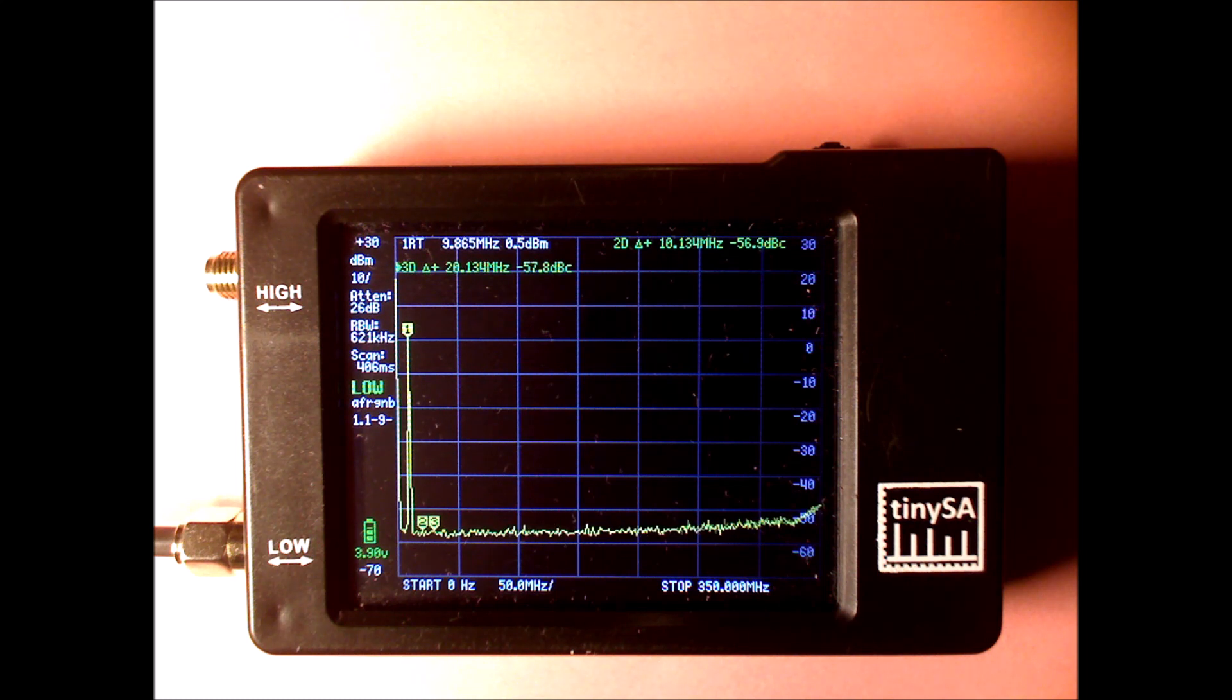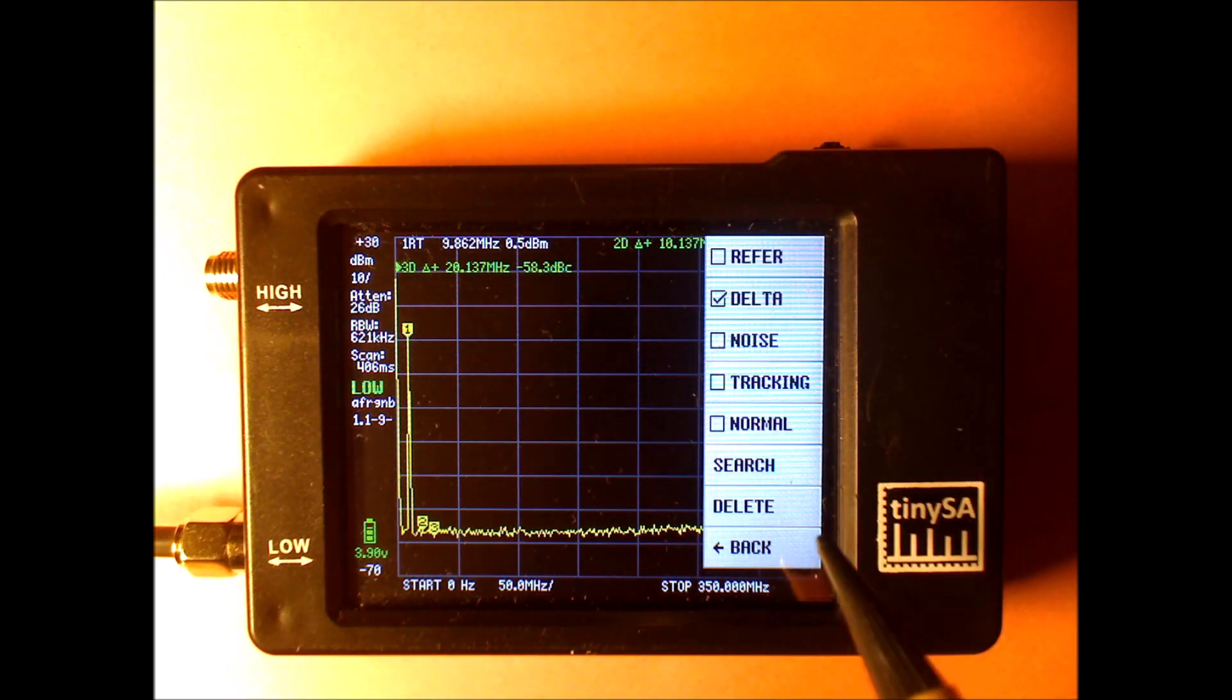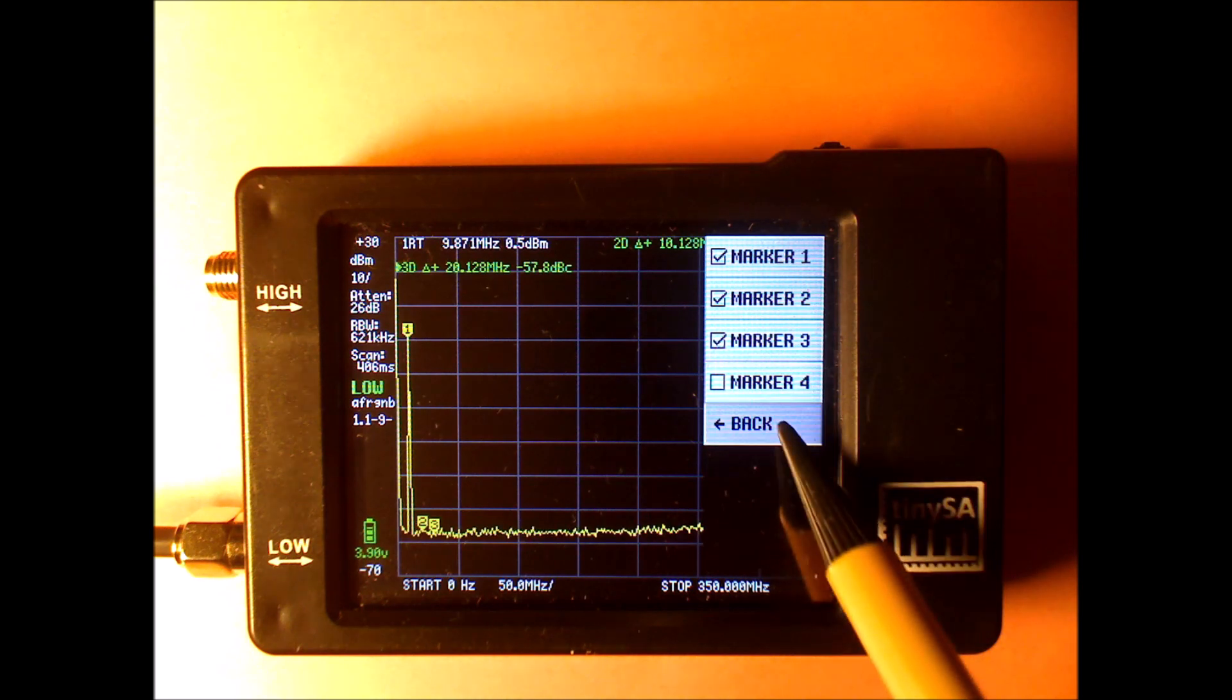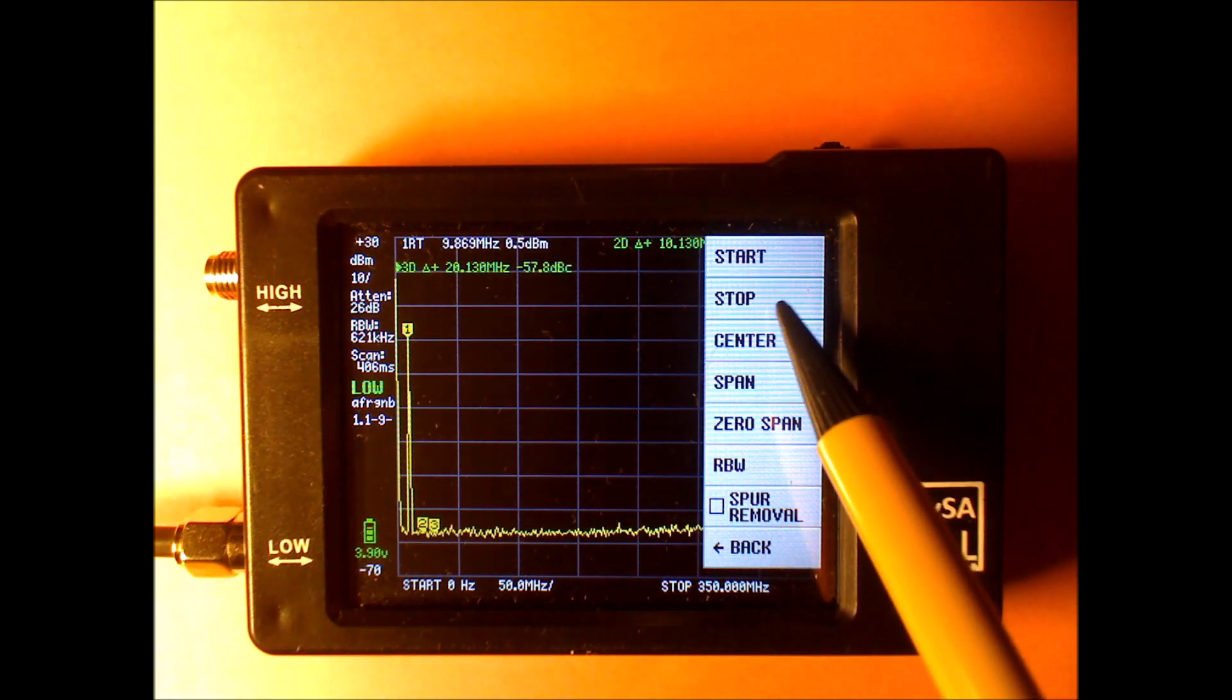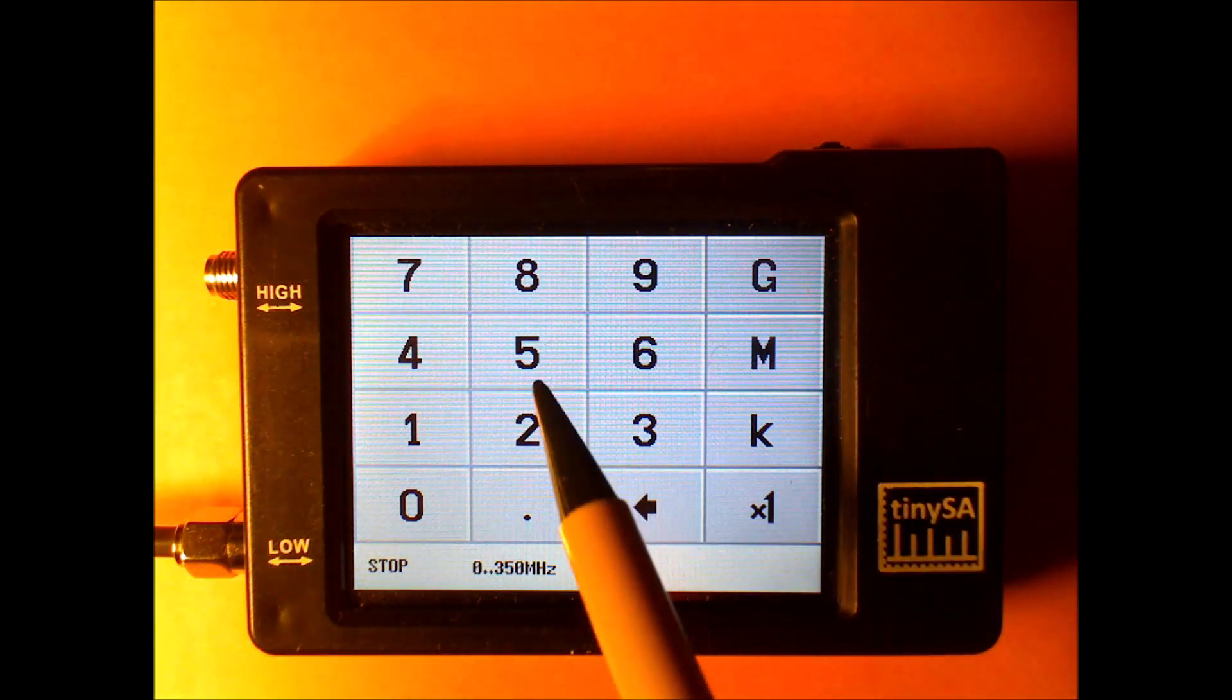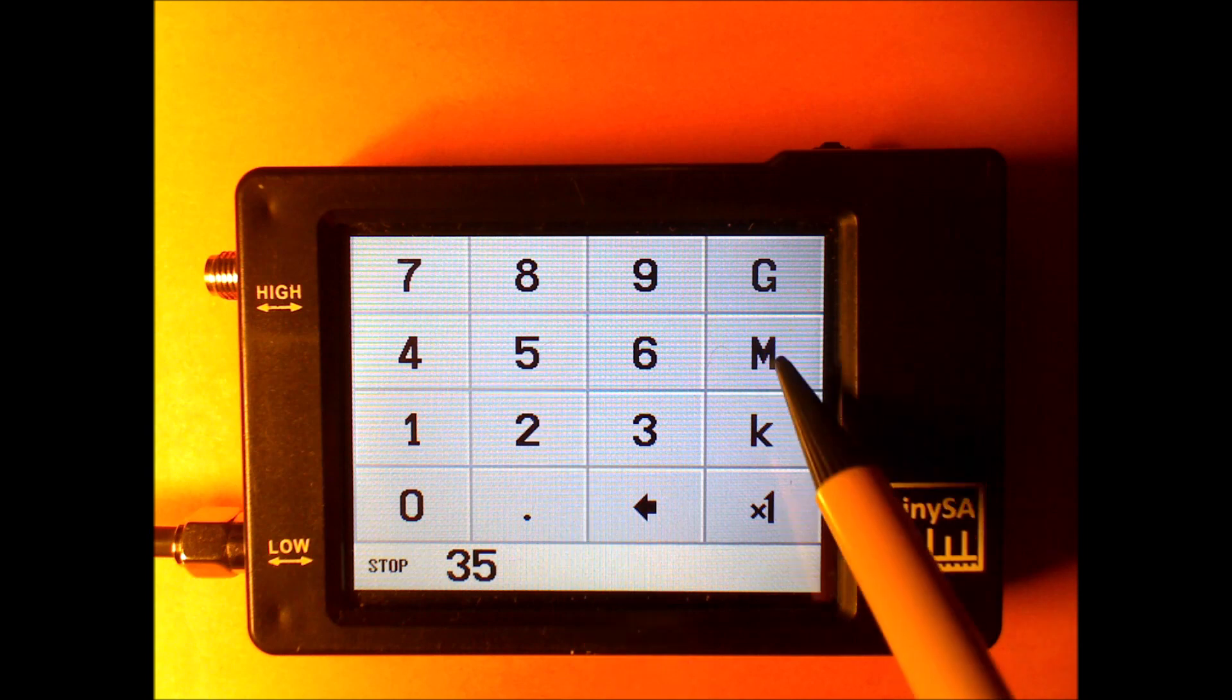As the next step, we're going to zoom in a bit to see where there are any harmonics at all. And to do that, I'm going to decrease the frequency span to stop at 35 MHz.